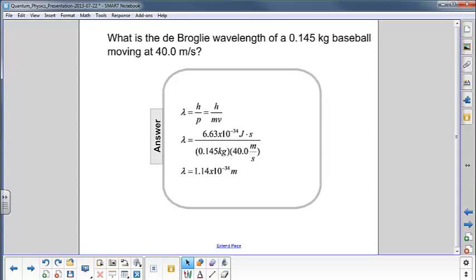We get a wavelength of 1.14 times 10 to the minus 34 meters, which is really, really close to zero. So the de Broglie wavelength for an object that we can see with our own eyes is vanishingly small.